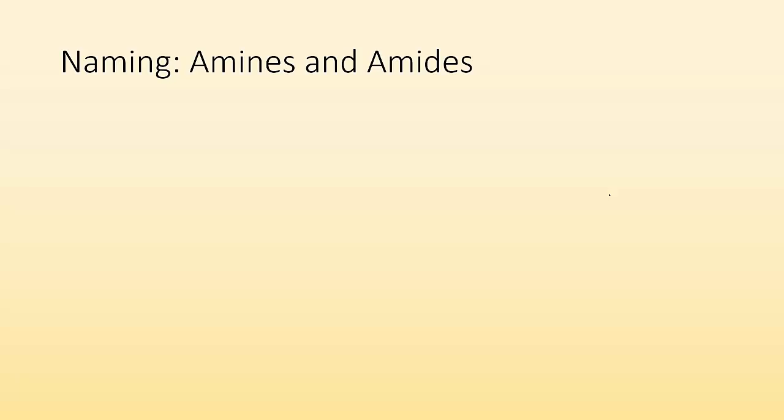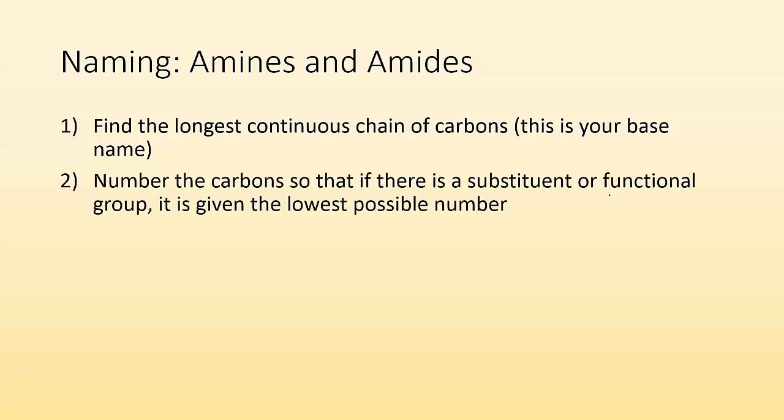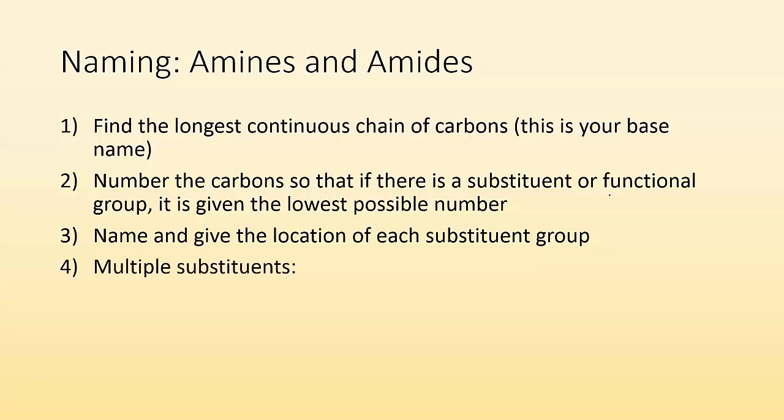Hey, it's Mr. Donnieu again. This time we're going to take a look at naming amines and amides. So, same thing that you're going to do: you're going to find the longest continuous chain of carbons. This is going to be your base name. You're going to number the carbons so that if there's a substituent or a functional group, it's given the lowest possible number. You're then going to name and give the location of each substituent group. And if you've got multiple substituent groups that are the same kind, you're going to use di, tri, tetra, etc. to say how many you got.